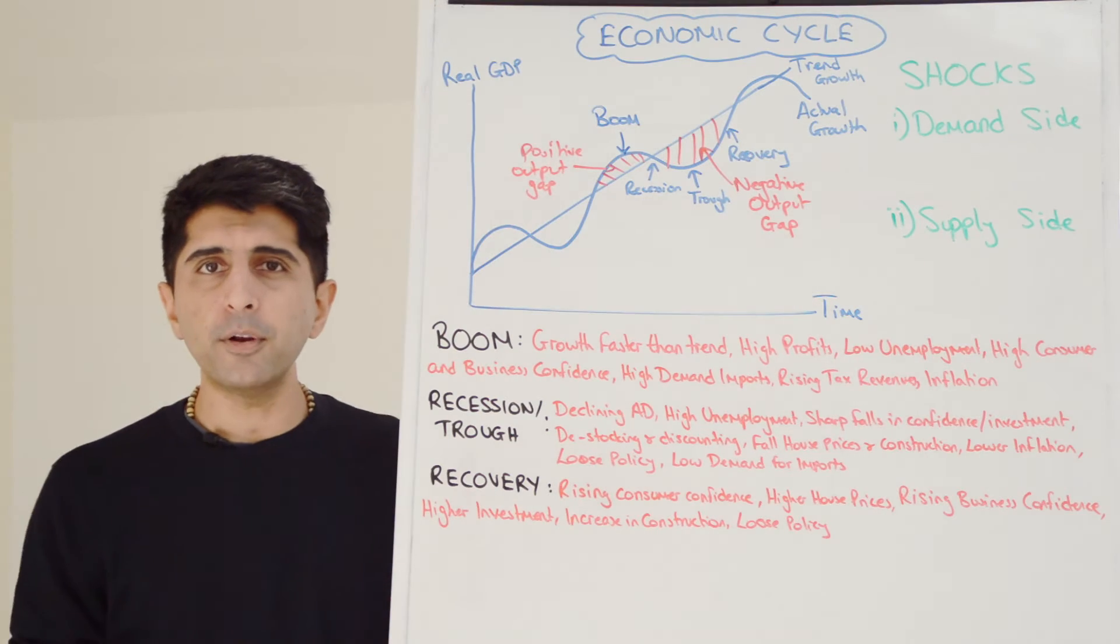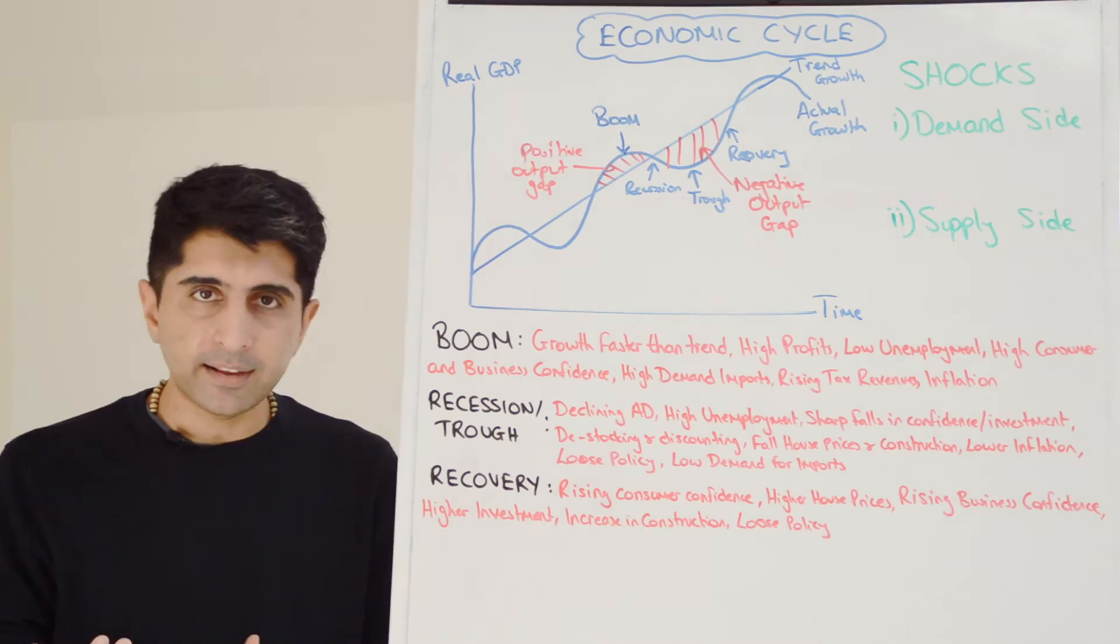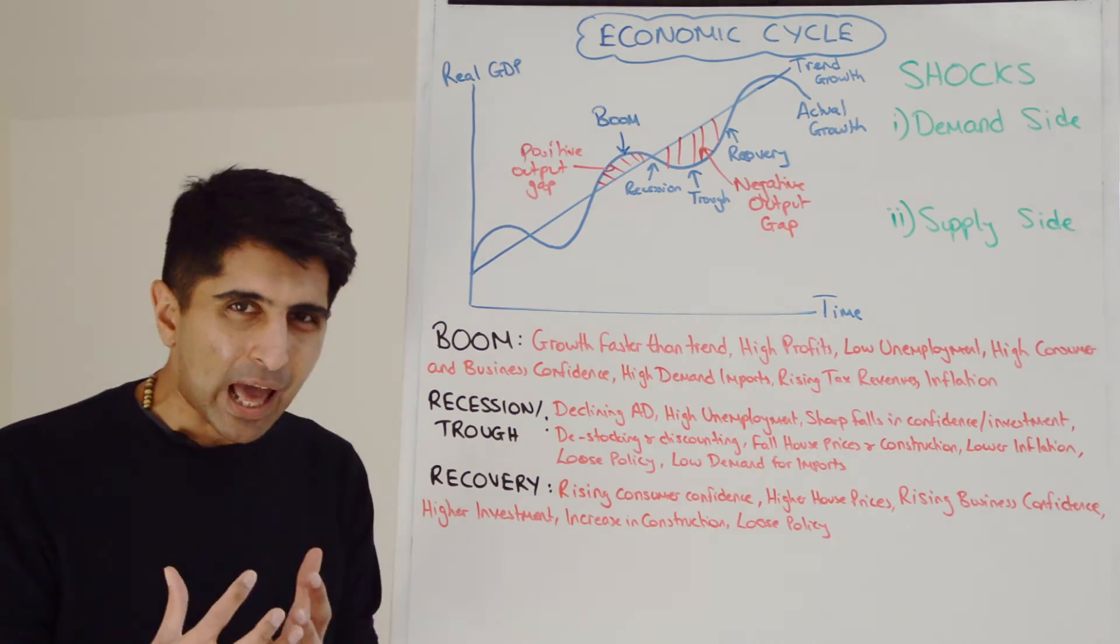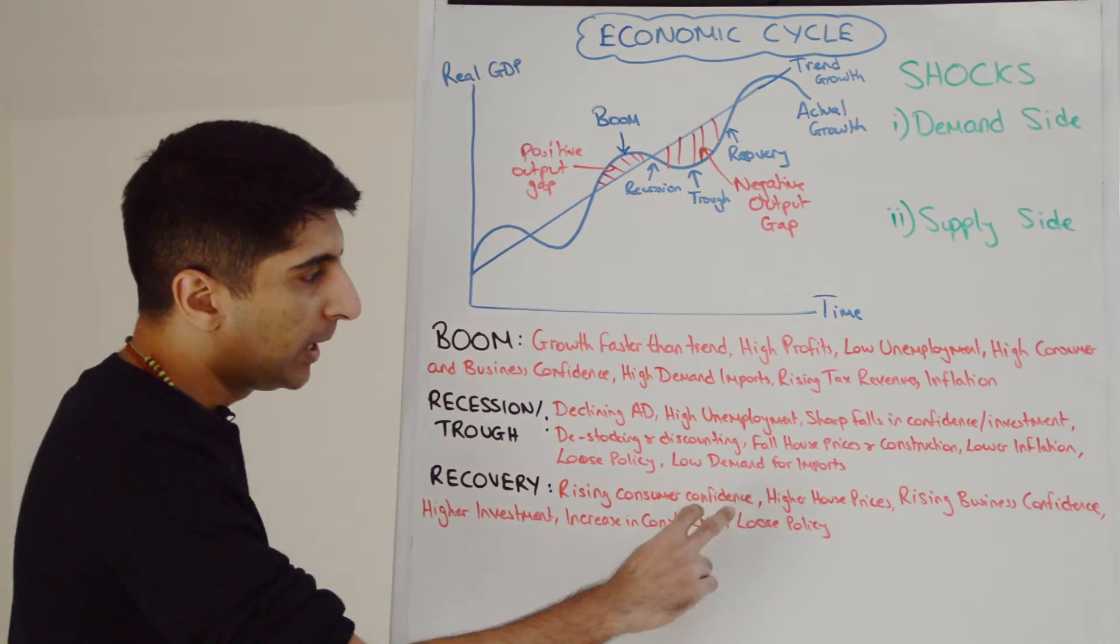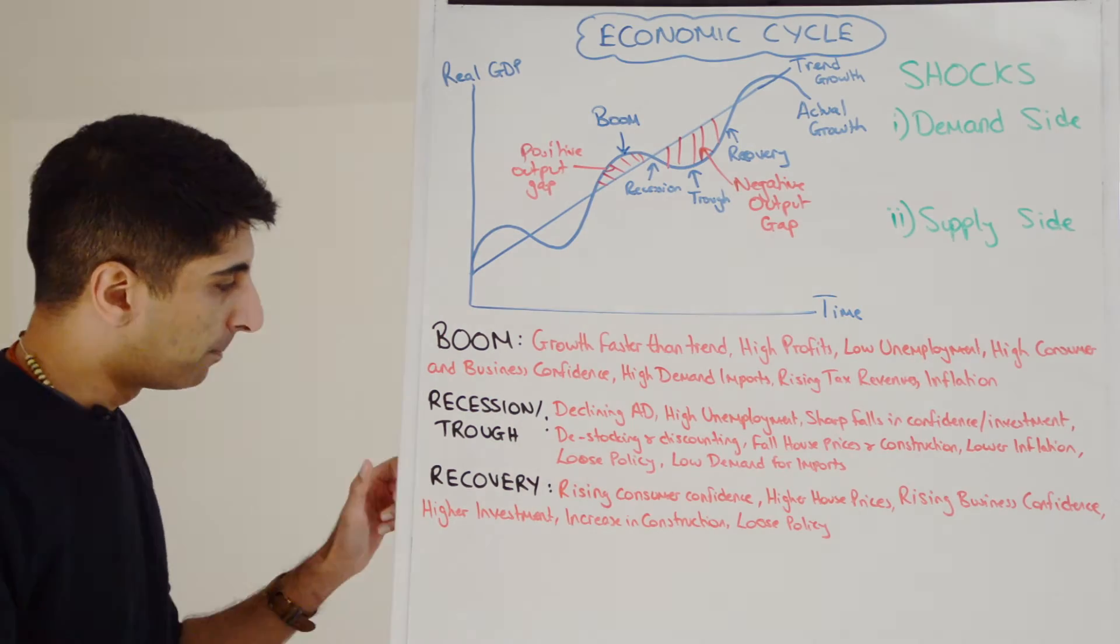We can expect loose macro policy, things like lower interest rates, things like maybe higher government spending, lower taxation, to try and stimulate the economy and get AD up, try and get out of the trough, get out of the recession. But also because incomes are low, low demand for imports. So essentially the opposite of what we see in a boom.